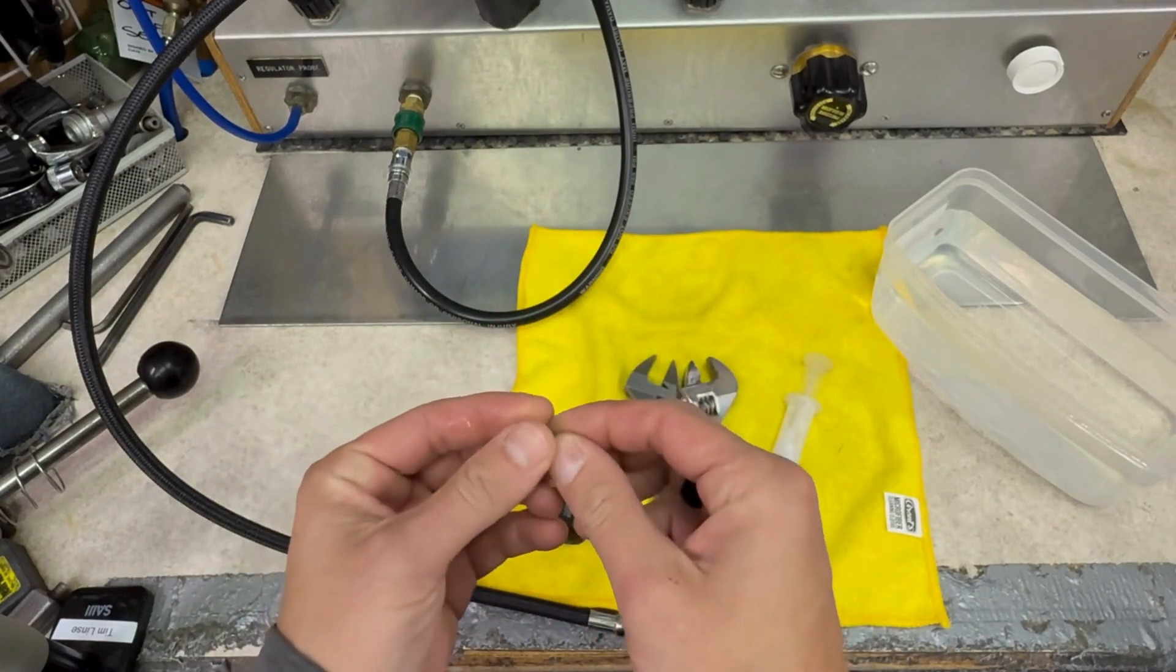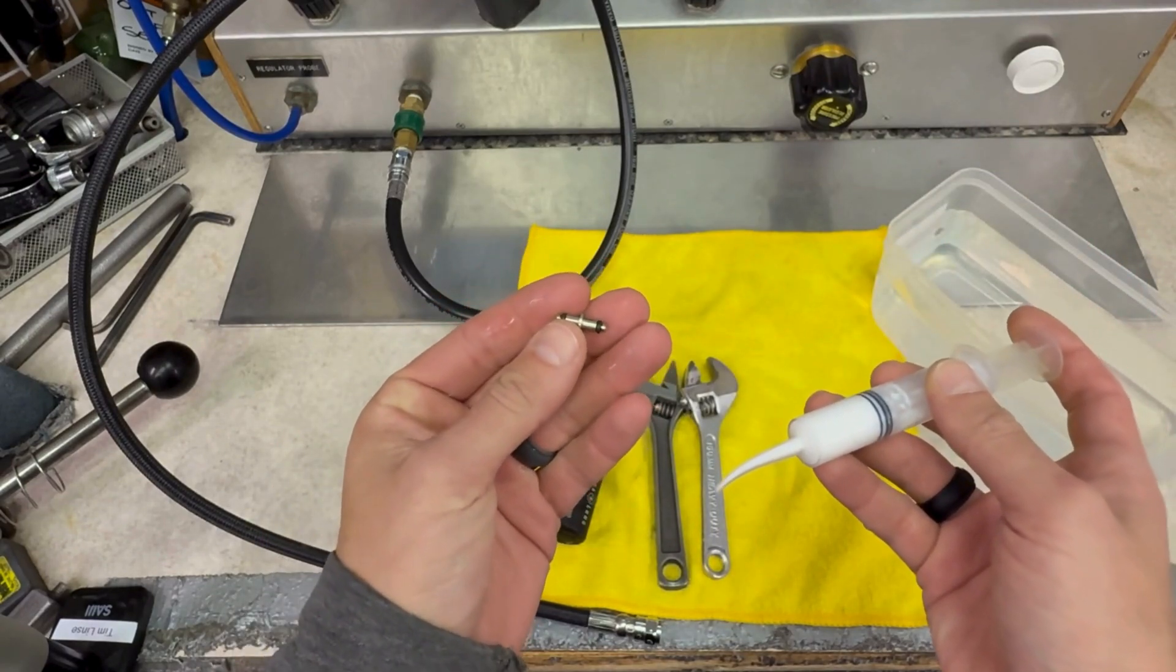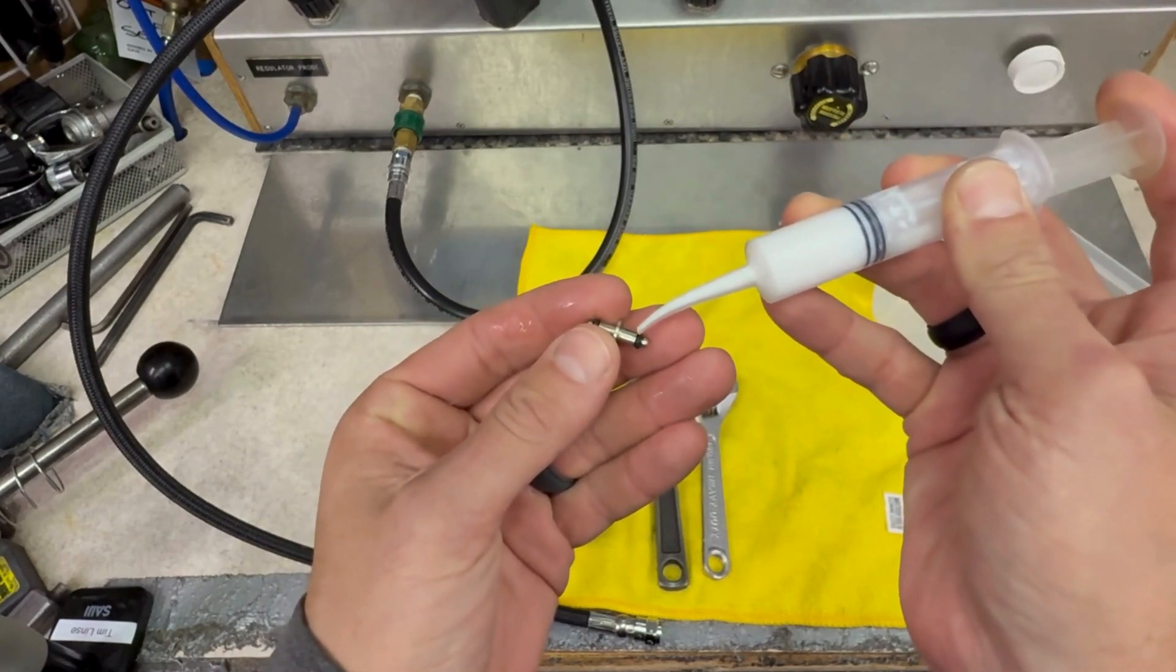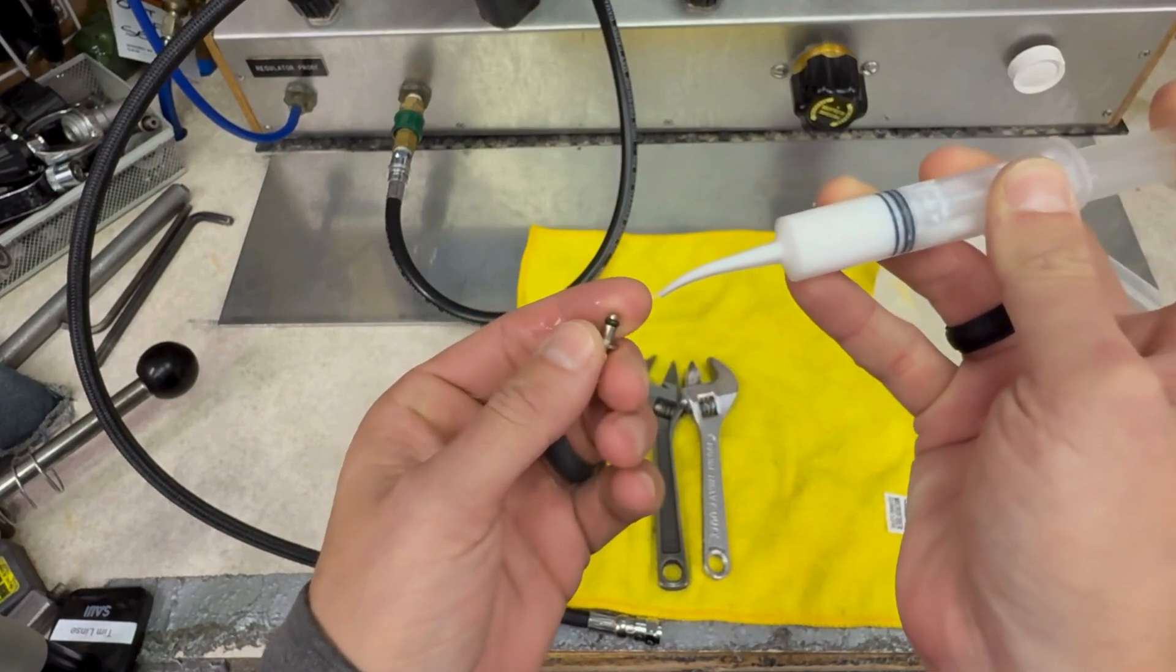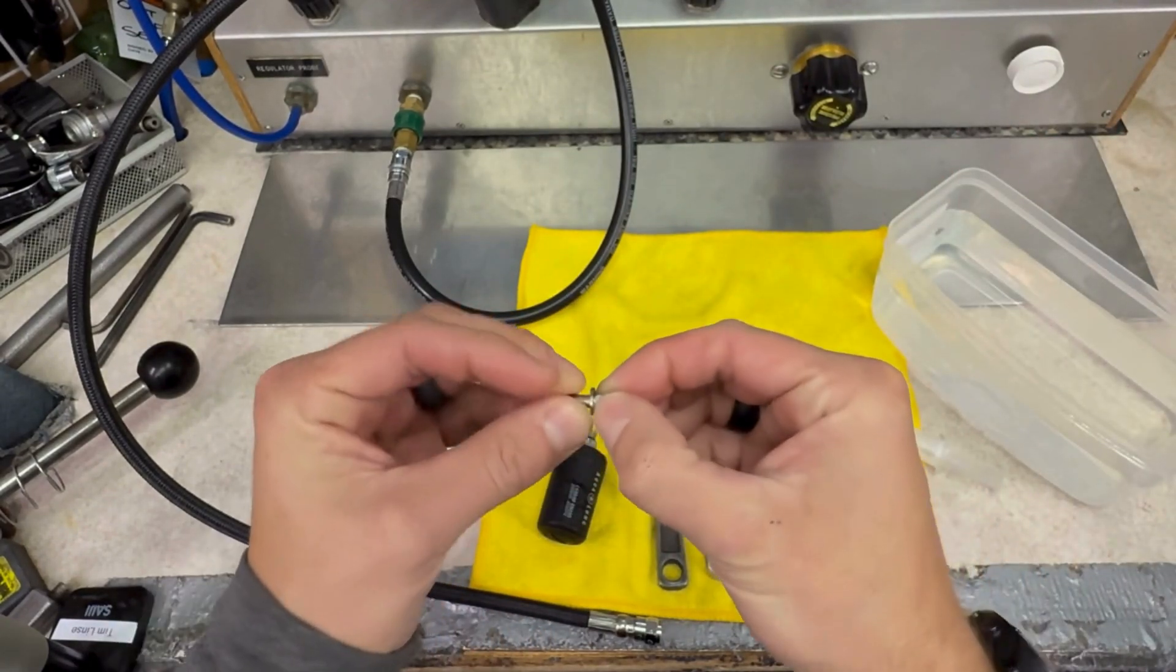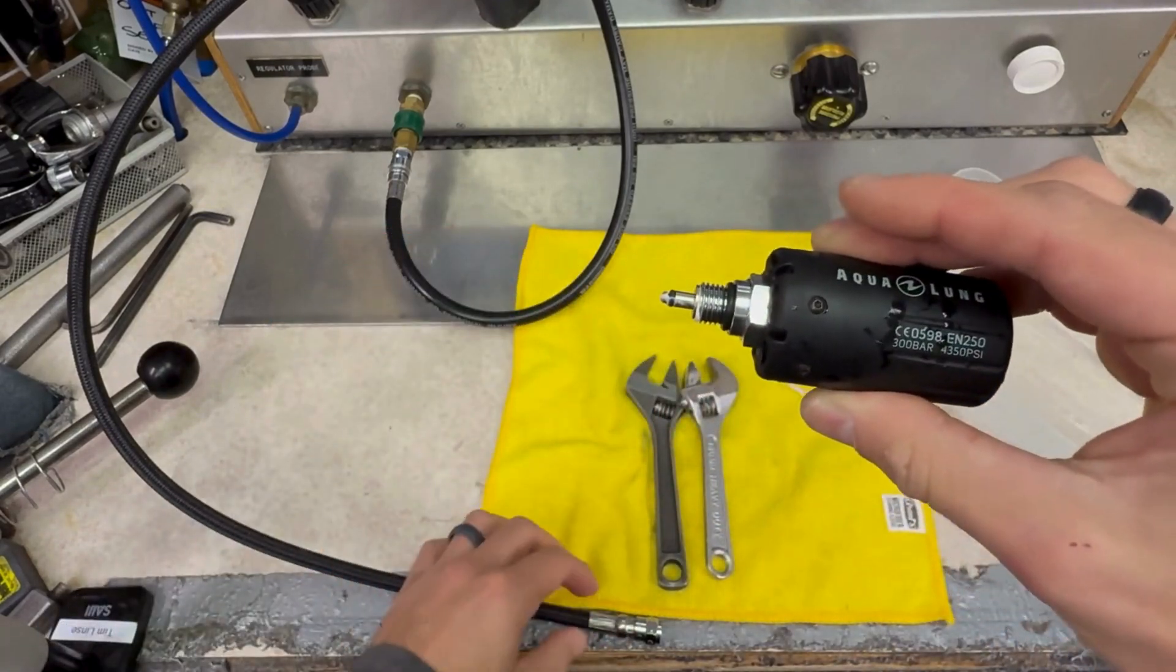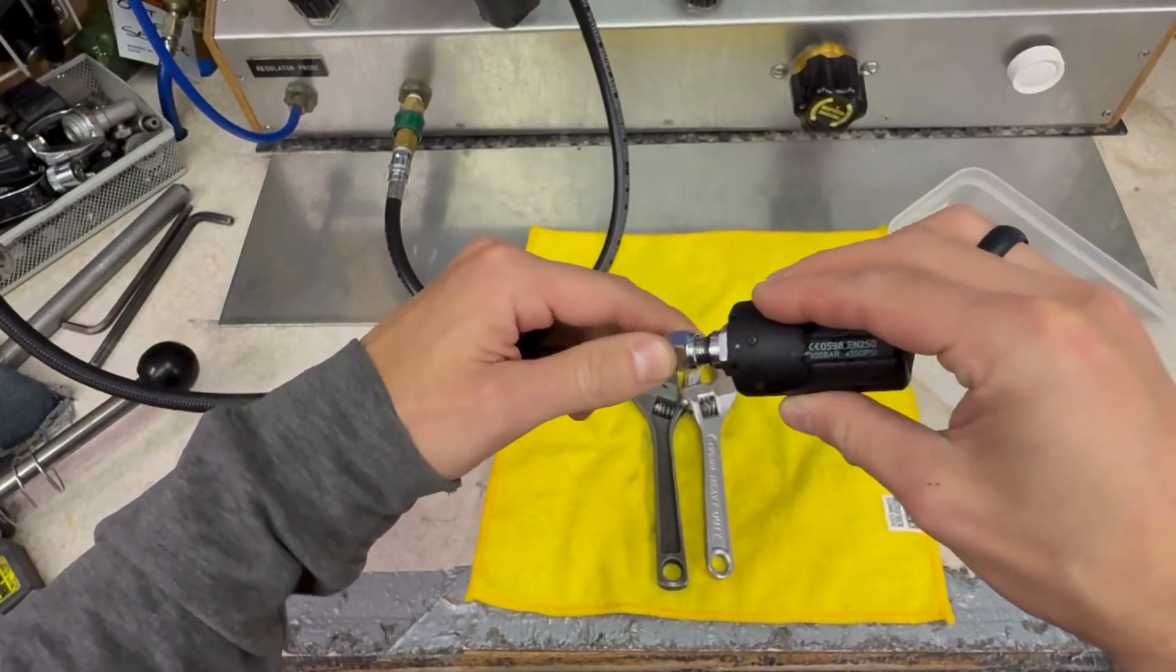So when you purchase your high-pressure spool, there's a few different variations. The most common right now is the flange spool. You're going to just put a little bit of lubricant, some silicone, on either side, rub it in, insert the spool, tighten up.